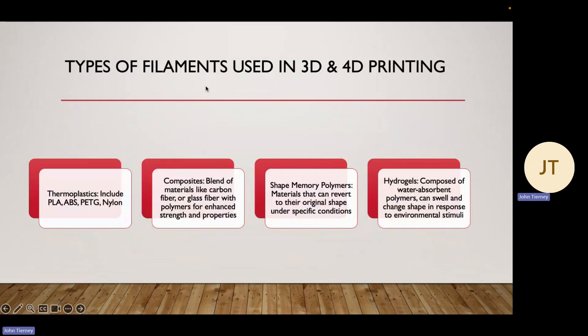Here are the different types of filaments used in 3D and 4D printing. The first two are more 3D-based and the last two are more 4D-based. PLA is the most common type of filament used in 3D printing because of its ease of use. Then we have ABS, which is a little bit more durable than PLA, and then PETG and nylon, which are the most durable and chemical resistant.